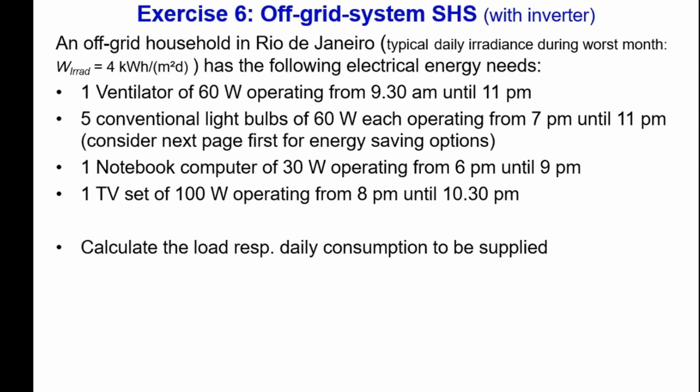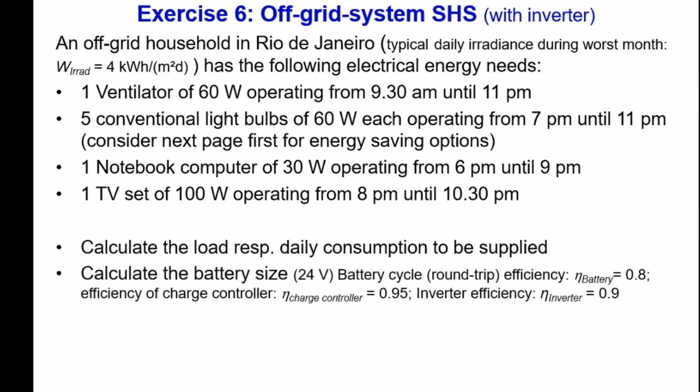We calculate the load — specifically the daily consumption to be supplied — considering the energy-saving options. Then we calculate the battery size for a system voltage of 24 volts. The battery round-trip cycle efficiency from charging to discharging is 80%, the charge controller efficiency is 0.95, and the inverter efficiency is 90%.